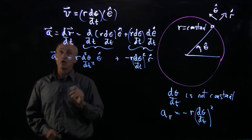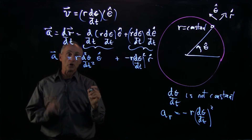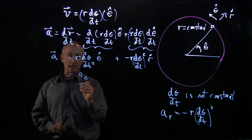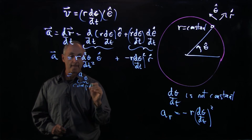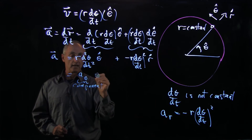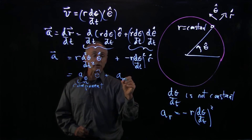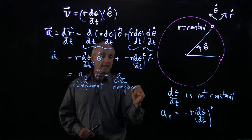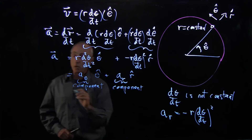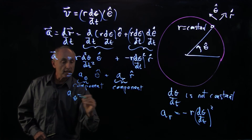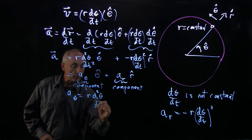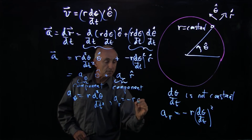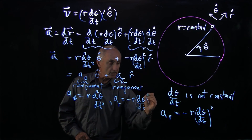That is our acceleration. Notice that it has two components. The first component is a theta, the tangential component, in the theta hat direction. Plus the radial component a r in the r hat direction. Here a theta is r times d squared theta dt squared, and a r is minus r times d theta dt squared.